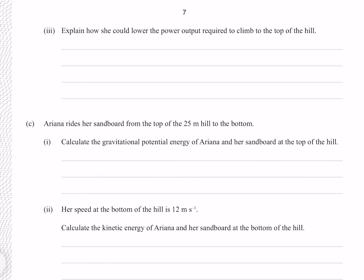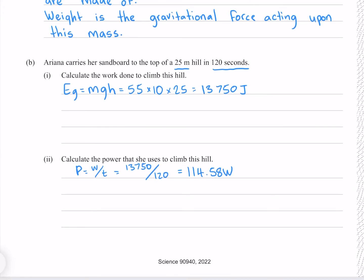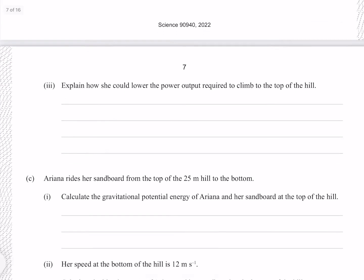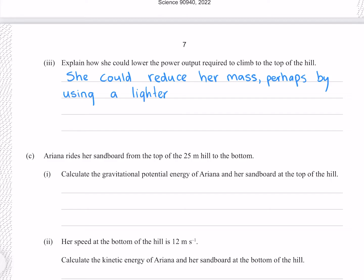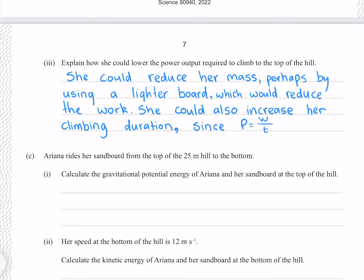Explain how she could lower the power output required to climb to the top of the hill. So let's look at the factors that affected this number. First of all, we have the mass. We can't change the acceleration due to gravity. We can't change the height of the hill, but we can change the duration. If we increase our t down here, then our power is going to decrease. So we have two ways. She could reduce her mass, perhaps by using a lighter board, which would reduce the work. She could also increase her climbing duration, since power is work over time. Increasing the duration while keeping the work the same will reduce her power.